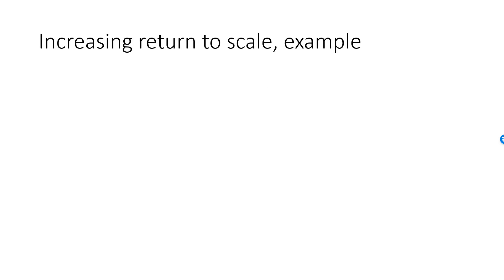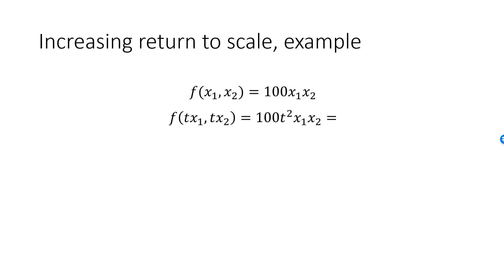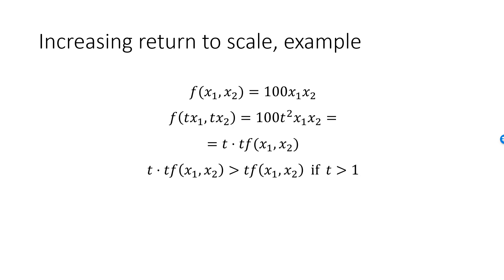In my next production function, f of x1, x2 is 100 times x1 times x2. The new level of production is 100t squared times x1 times x2, which we can write as t times t times f of x1, x2. For example, if t equals 2, a doubling of all production factors leads to a quadrupling of output. Formally, t times t times f of x1, x2 is strictly greater than t times f of x1, x2 when t is strictly greater than 1, proving that we have an increasing return to scale.